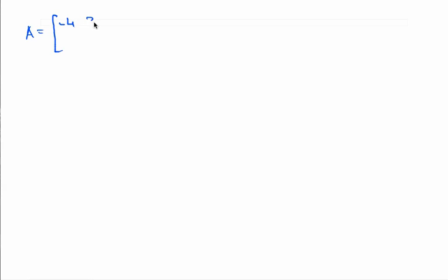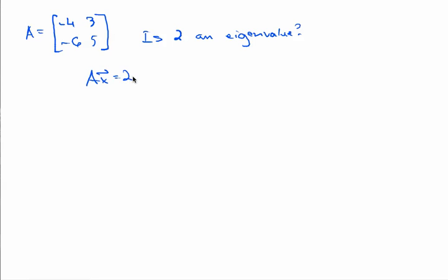Let's start with another matrix: A equals negative 4, 3, negative 6, 5. I'd like to know: is 2 an eigenvalue for this matrix? In the previous example I provided a vector upfront, but suppose I don't have that. How do I know whether 2 is an eigenvalue or not? If 2 were an eigenvalue, there would have to be a vector x such that A times x equals 2 times x — an eigenvector corresponding to it. This equation always has the solution x equals the zero vector, so I'm really interested in whether there are non-zero vectors that satisfy that equation.